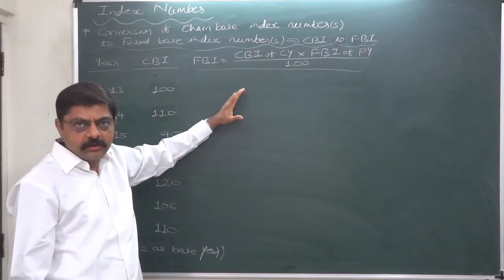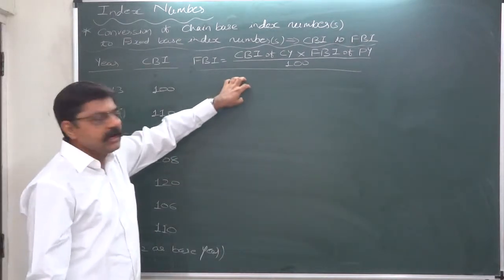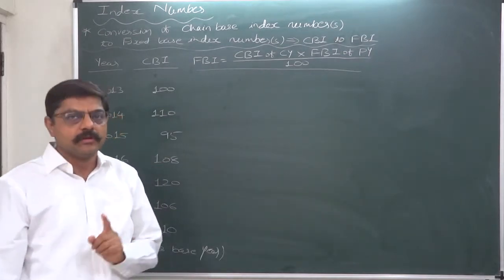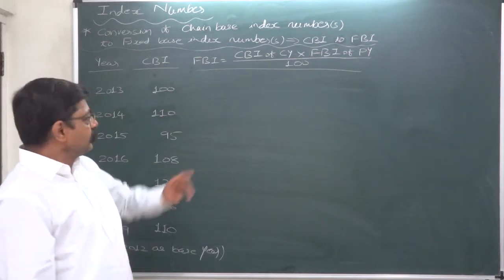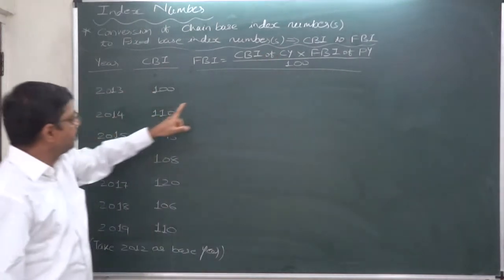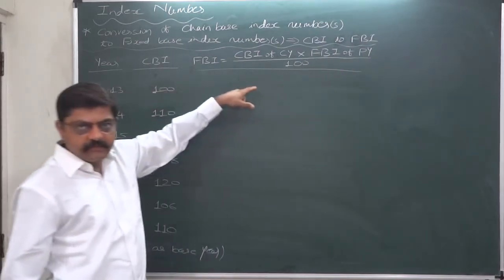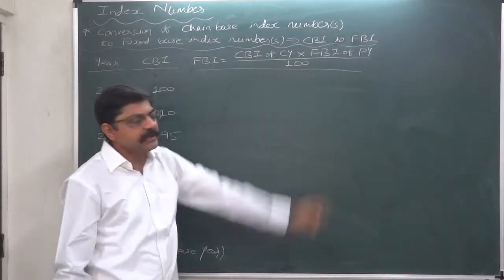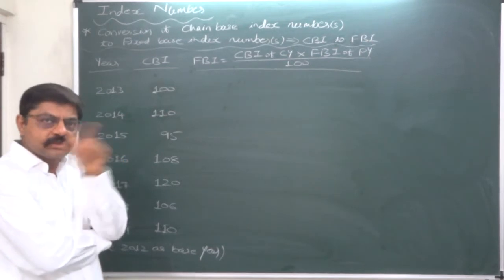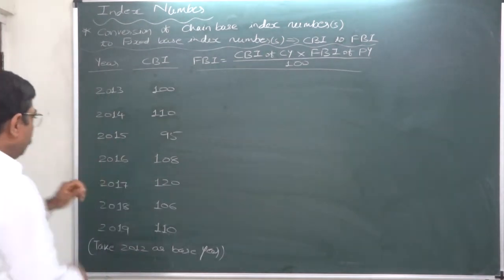Be alert: if you calculate any one of these index numbers wrongly, all subsequent index numbers will also be wrong. Chain base index number of the current year, multiplied by the fixed base index number of the previous year already calculated, divided by 100 — the result is the fixed base index number. This is the conversion of the chain base index number of any year to the fixed base index number of that year.